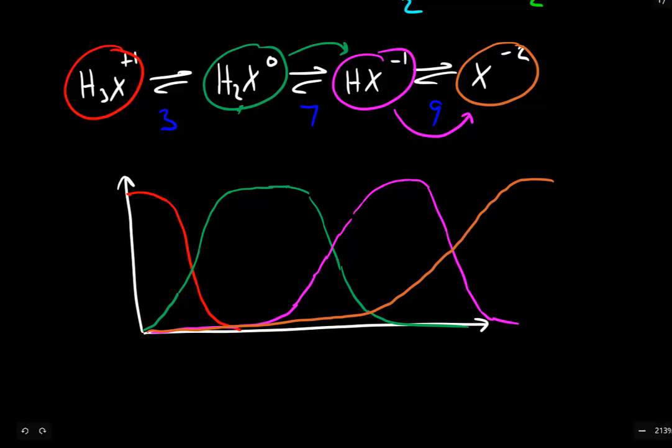The last thing we want to do is to assign pH values. So at this first point where the concentration of the first two species are equal, this is our first pKa, 3. At the second point where the concentrations are equal, this is our second pKa, 7. At the third point where our concentrations are equal, this is our third pKa, 9.